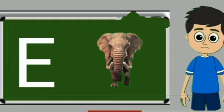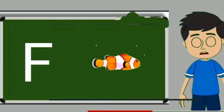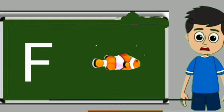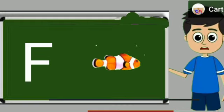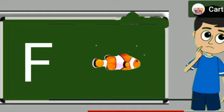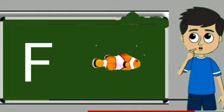E for elephant. Elephant means hathi. F for fish. Fish means machli.